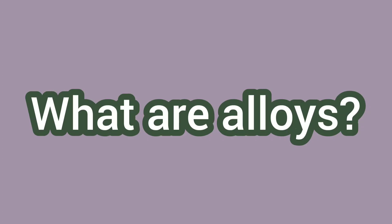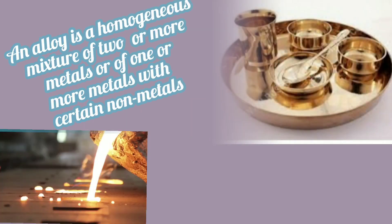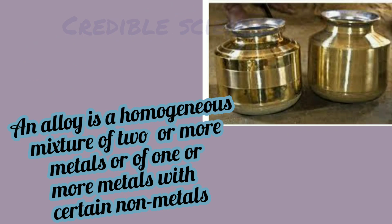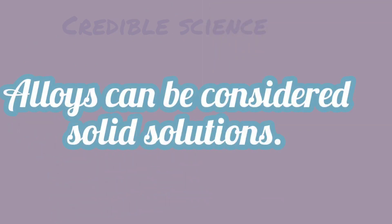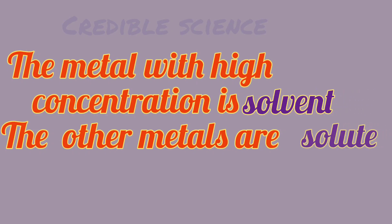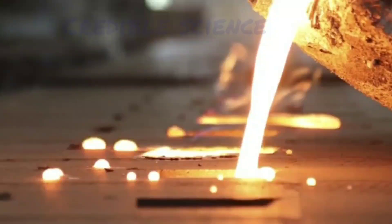What are alloys? Alloys are nothing but a homogeneous mixture of two or more metals, and even non-metals combined with them. We can say alloys are solid solutions. In a solution, one component is the solvent and the other is the solute. The higher concentrated metal is the solvent and the rest are solute.